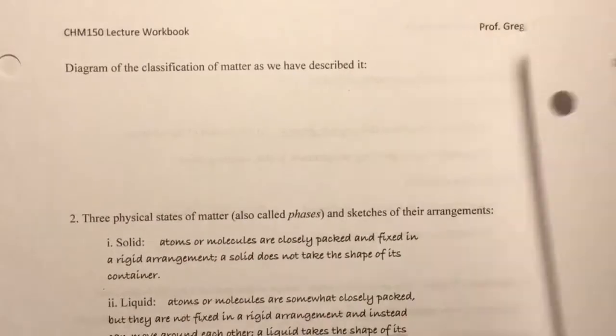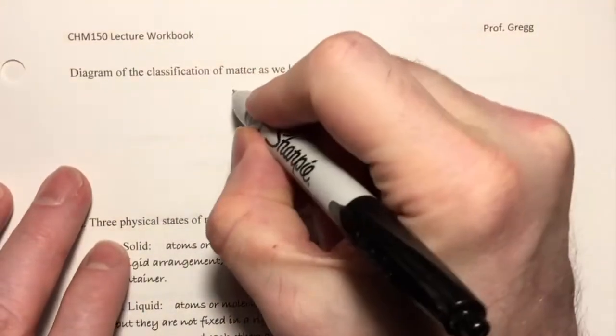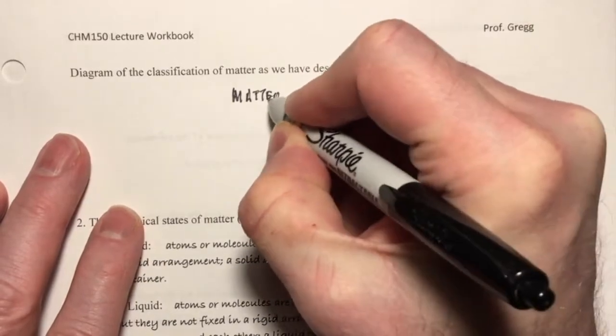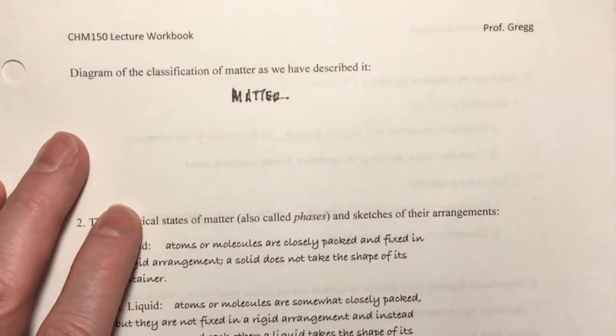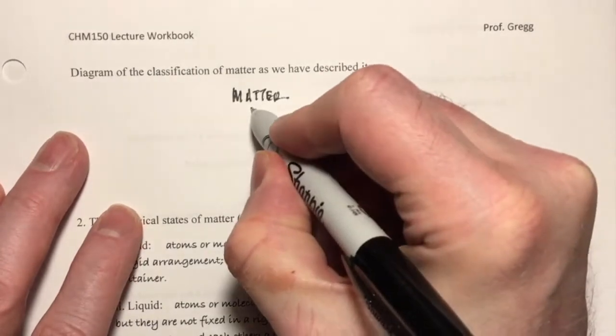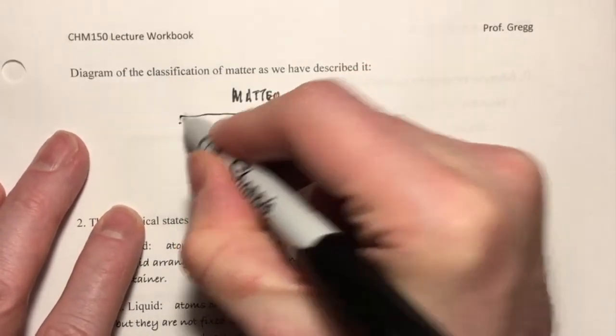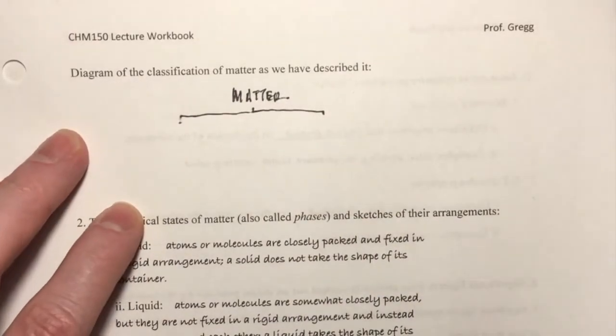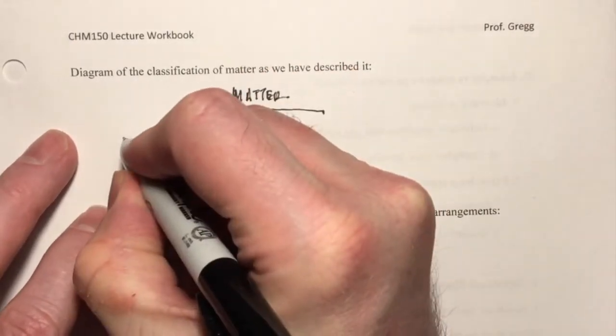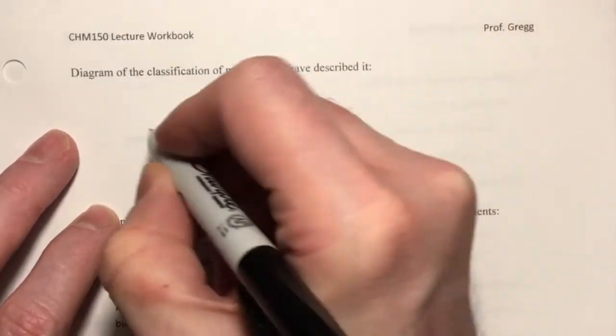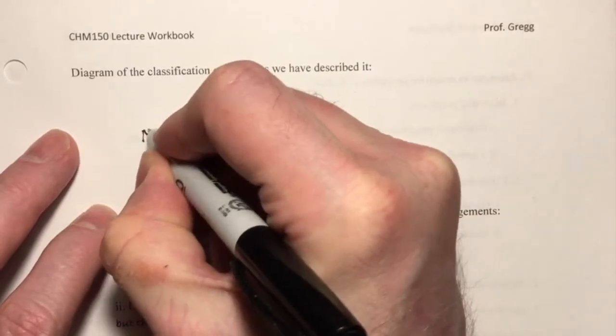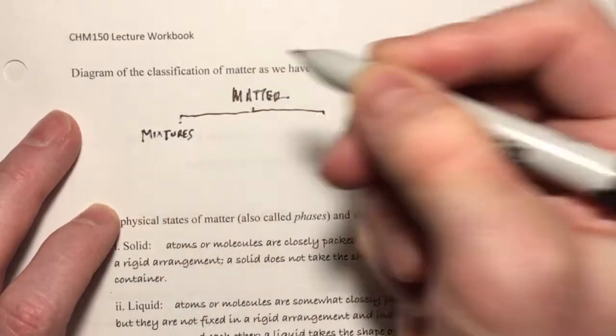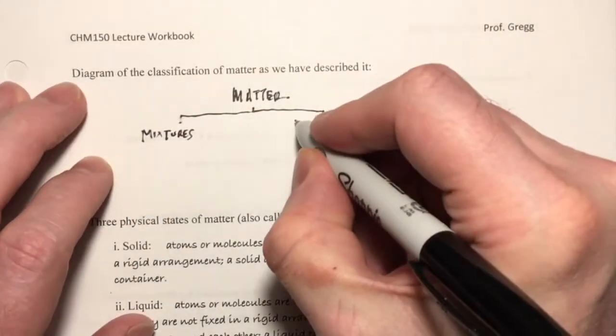So let's go ahead and do that. So we've got matter up here at the top. That's the overriding category. Then we're going to break that up into two subcategories. And they were pure substances and mixtures. I'm going to put mixtures over here on the left, and then pure substances on the right.